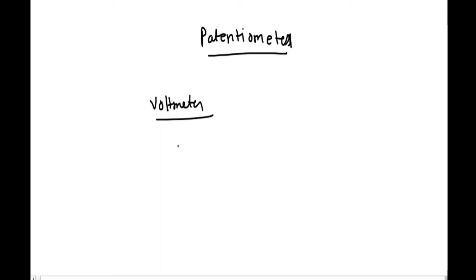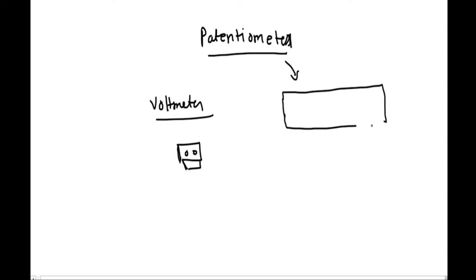We have a voltmeter which is very small in size — you can even carry it. On the other hand, the potentiometer is very large in size. The question is why we prefer potentiometer over voltmeter. The potentiometer gives us an accurate reading of potential difference compared to the voltmeter.